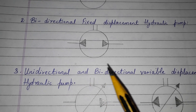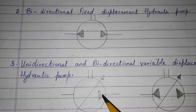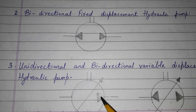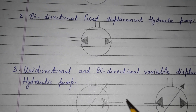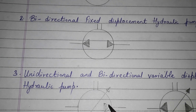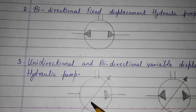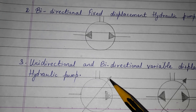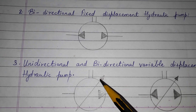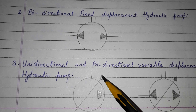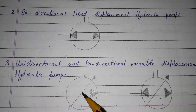Next is the unidirectional variable displacement hydraulic pump. Unidirectional means the flow is in one way or one direction. Here one arrow is shown, which means the displacement or discharge can be varied. This pump is called the unidirectional variable displacement pump.